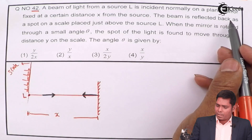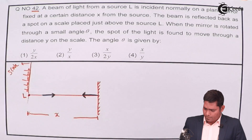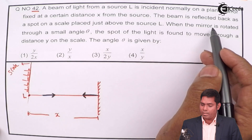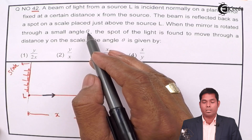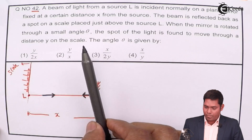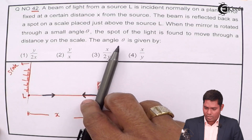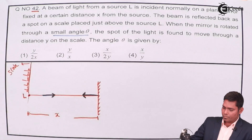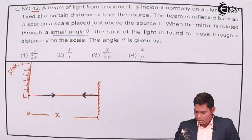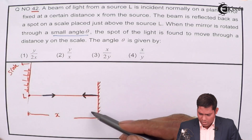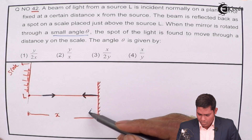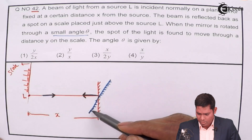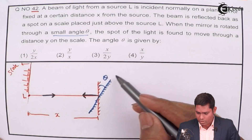A beam is reflected back as a spot on a scale placed just above the source L. When the mirror is rotated through a small angle theta — why small? Because some approximation has to be taken. So when the mirror is rotated by small angle theta, this is the new situation of the plane mirror.